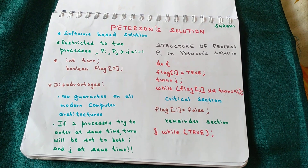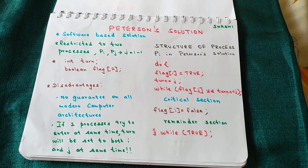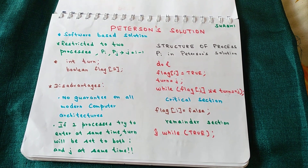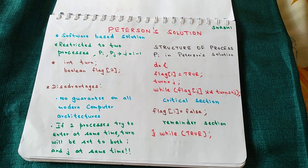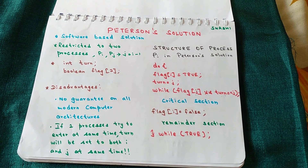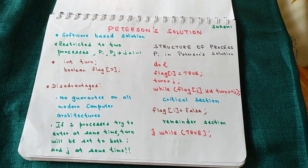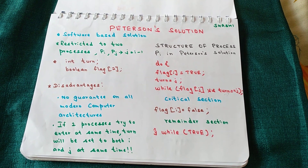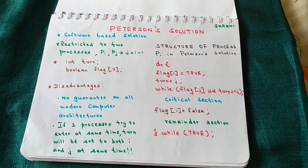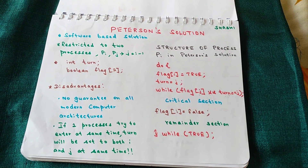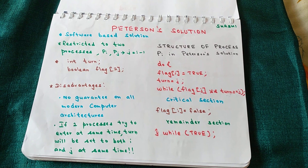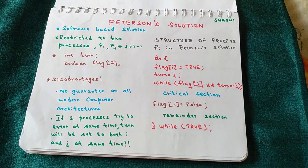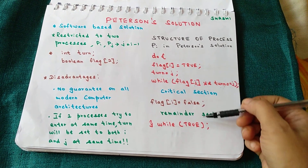Peterson's solution provides a software-based solution to the critical section problem, meaning it provides an algorithmic description of solving the problem. By understanding this algorithm we can also understand the complexities involved in designing such a solution. Any solution to the critical section problem must satisfy three requirements: mutual exclusion, progress, and bounded wait.